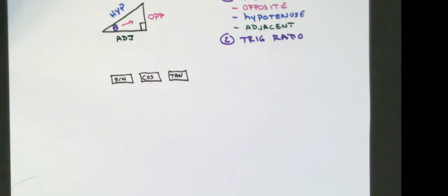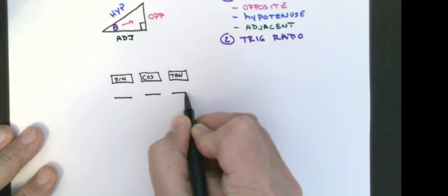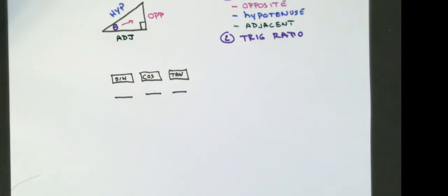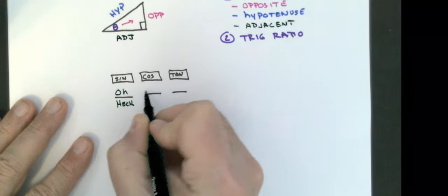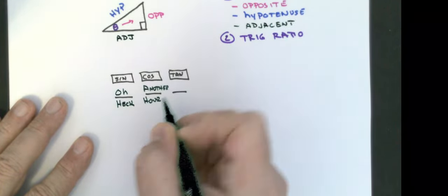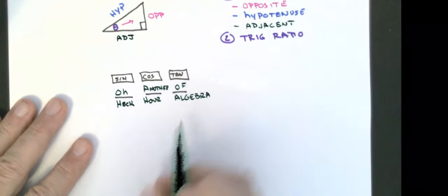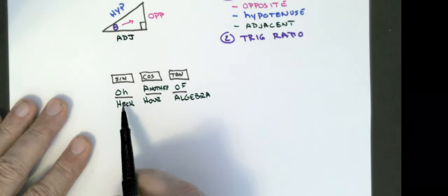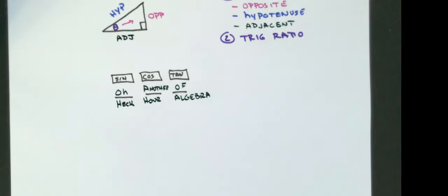There are two ways to remember what the ratios are. The first: remember the sentence 'Oh Heck, Another Power of Algebra.' The O and H go with sine, the A and H go with cosine, and the O and A go with tangent — provided calculators always keep those buttons in the same order.